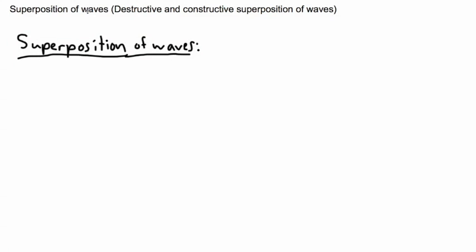When we were looking before at interference of waves, that's in a sense the same thing as superposition of waves. So we're going to look at destructive and constructive in terms of superposition of waves. Superposition is actually just when we have two or more waves interacting with each other.